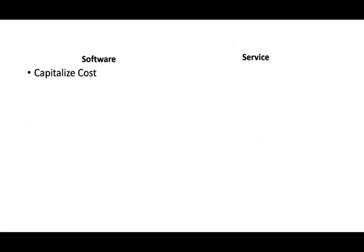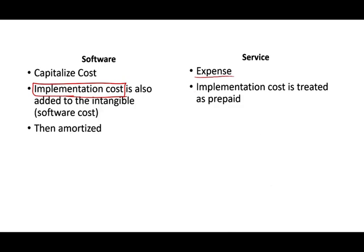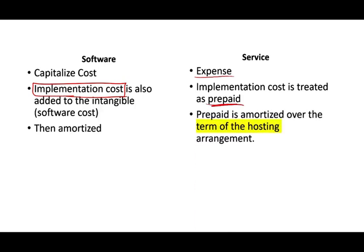If it's a software arrangement, they capitalize the cost of the software. Any implementation cost is added to the software cost and amortized. If it's a service arrangement — like storing your files — you treat it as an expense. However, the implementation cost is treated as a prepaid, and you amortize the prepaid over the term of the hosting arrangement.